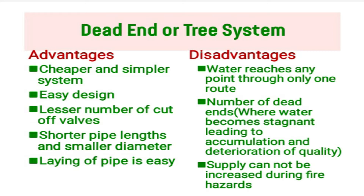Advantages of the dead end or tree system: it is a cheaper and simpler system, design is easy, cut-off valves are fewer, pipelines are shorter, smaller diameter pipes are used, and pipe laying is easy. Disadvantage: water reaches any point through only one route.